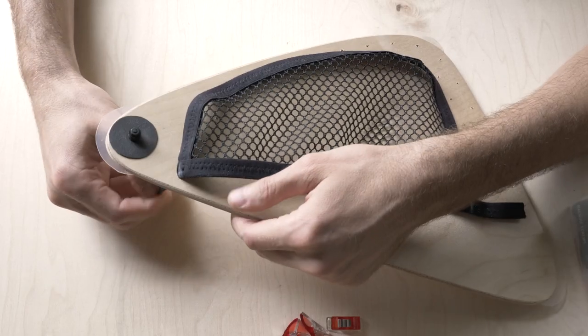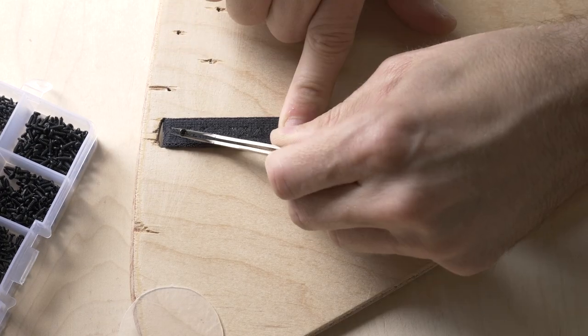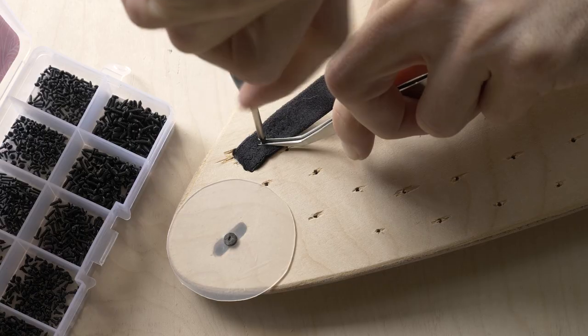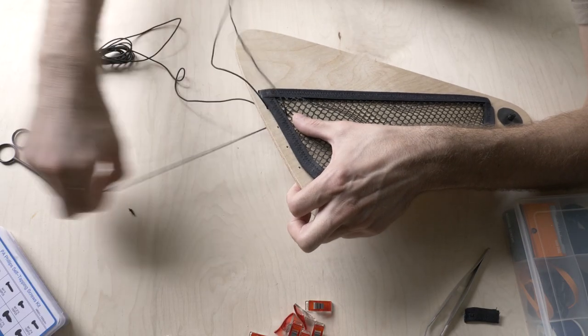I placed the pocket on the board and screwed either side of the top elastic piece to the back of the board. Then, I threaded the elastic cord through my pre-drilled holes to fix the pocket to the board.